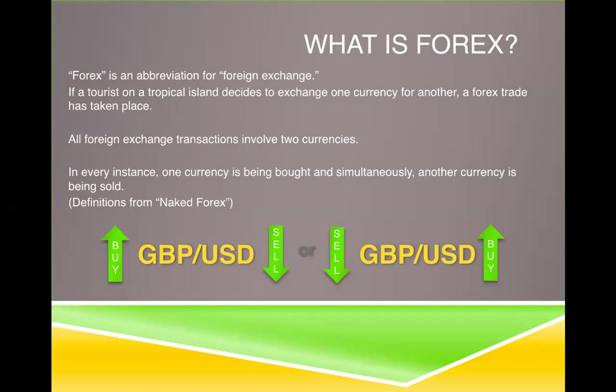All foreign exchange transactions involve two currencies. In every instance, one currency is being bought and simultaneously another currency is being sold. For example, somebody who is from America is going to be buying the Great British pound and selling the US dollar. Somebody from England will be selling the Great British pound and buying the US dollar. Very simple — we all know that when we go to the airport, we do the same thing.